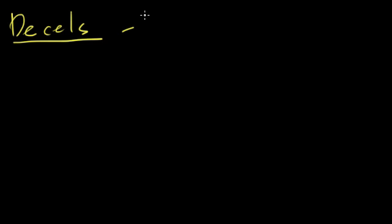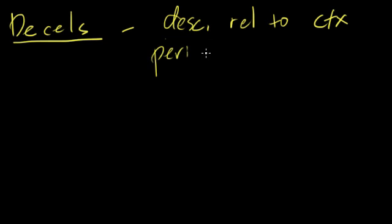First, before we talk about the types, let's give some general rules about decels. They are described relative to contractions. If they match contractions with some regularity - and these terms honestly aren't used a whole lot - but if they match the contractions with some regularity, they're called periodic, and if they don't, they're called episodic.